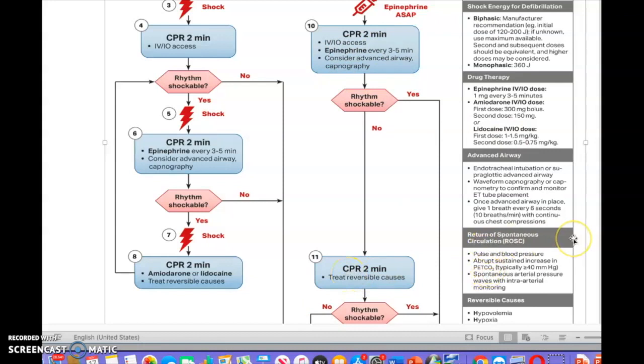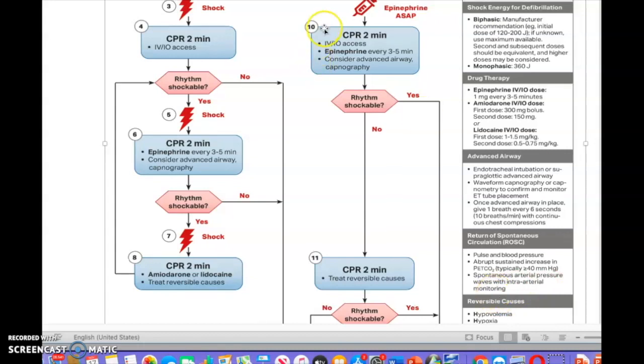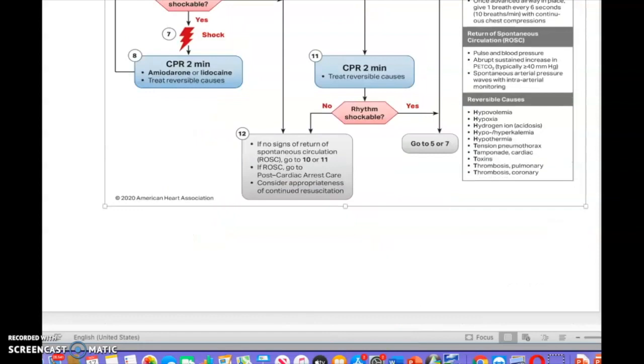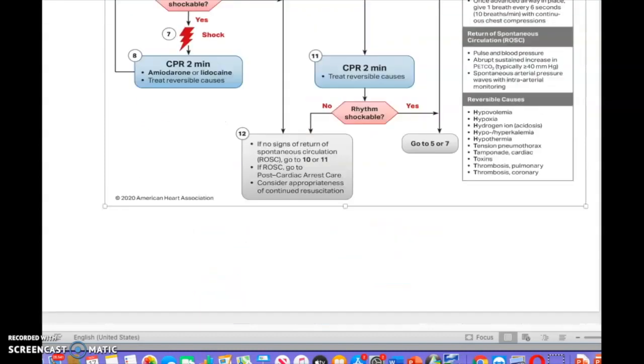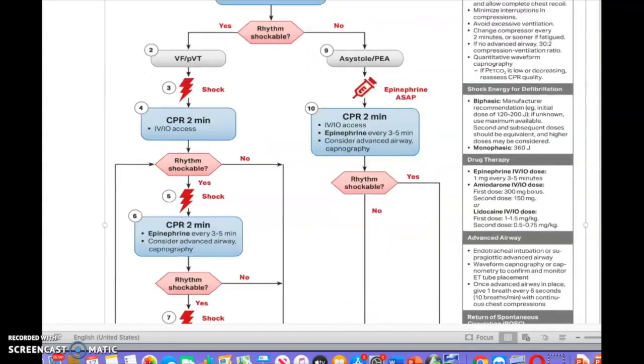This is 10 here, we got this already. We talked about this and we talked about 11, right? Return of spontaneous circulation, pulse and blood pressure. Abrupt sustained increase in capnography, less than 40 millimeters per mercury. Spontaneous arterial pressure wave with intra-arterial monitoring. You have to implement 10 and 11 if no signs of return of spontaneous circulation. Go to 10 and or 11 for further interventions guys.